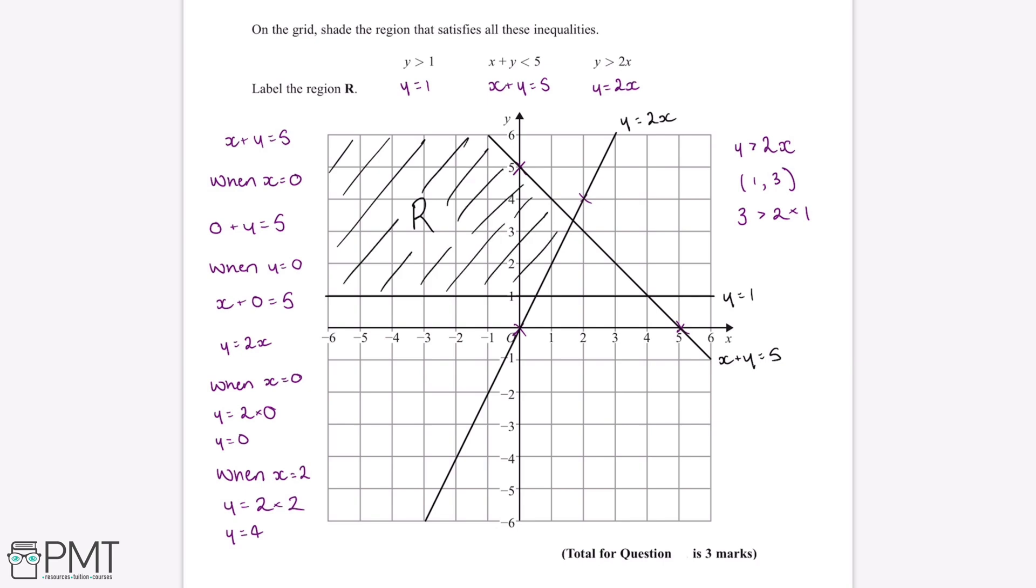Now this question is worth 3 marks. We'll get our first and second mark for correctly drawing in all 3 lines. And we'll get our third mark for correctly shading in region R.